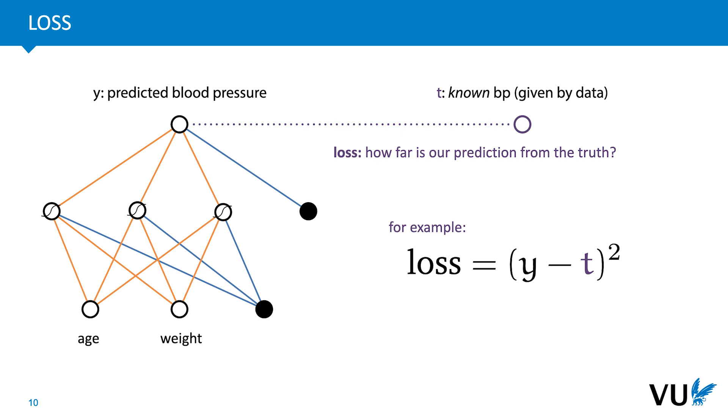A simple loss function for regression is the squared error. We just take the difference between the prediction y and the truth t, and we square it. This gives us a value that is zero for a perfect prediction, and that gets larger as the difference between y and t gets bigger. The loss can be defined for a single instance, as it is here, or for all instances in the data. Usually the loss over the whole data is just the average loss over all instances.